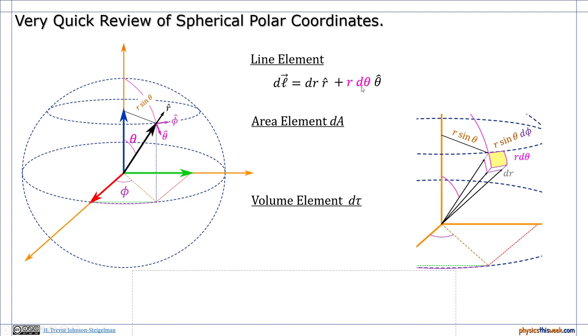In the theta direction, theta being down along, these would be north south lines on a globe. In that case, how far I travel depends on how far away I am from the center. So if you see over here, this bit, if I were moving way in closer, that line would be shorter. So I have to put in the r d theta for it.